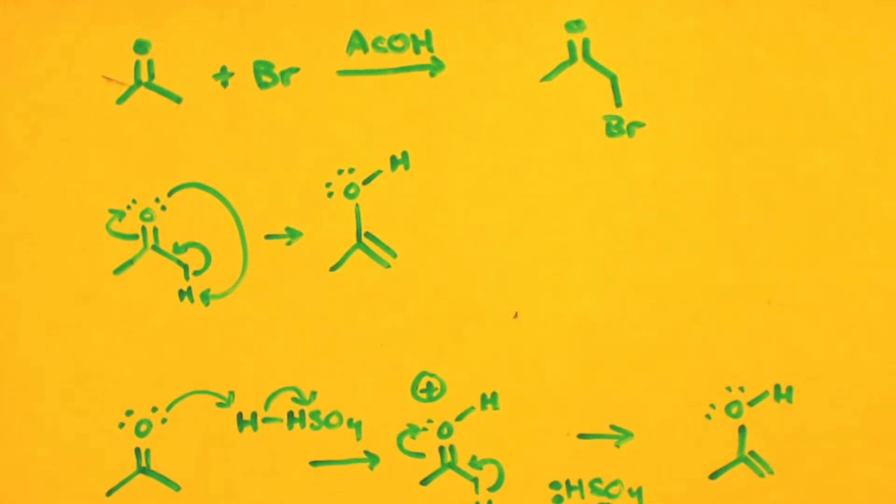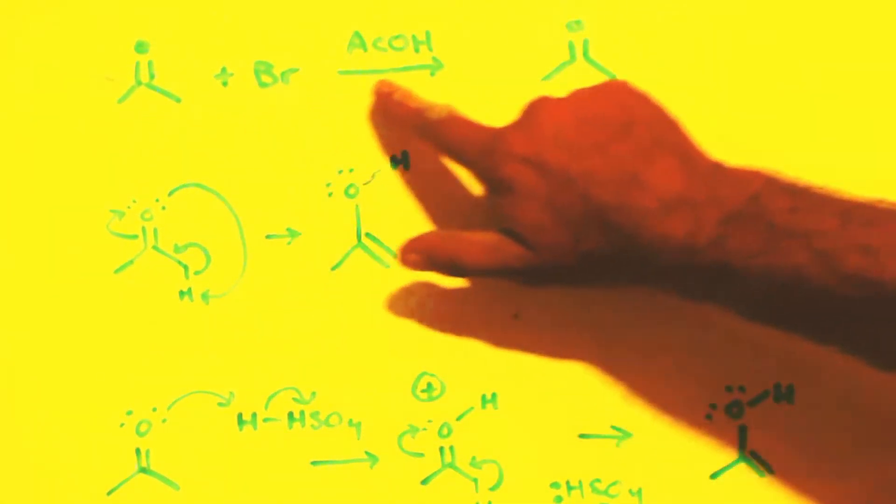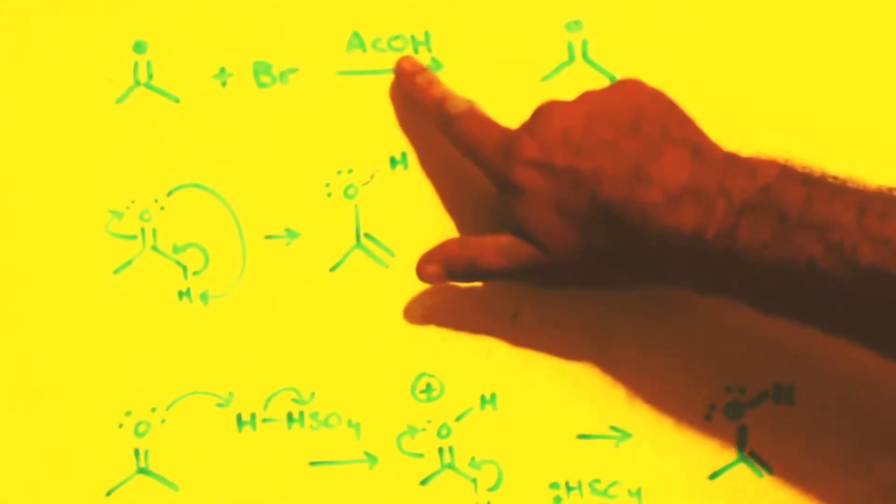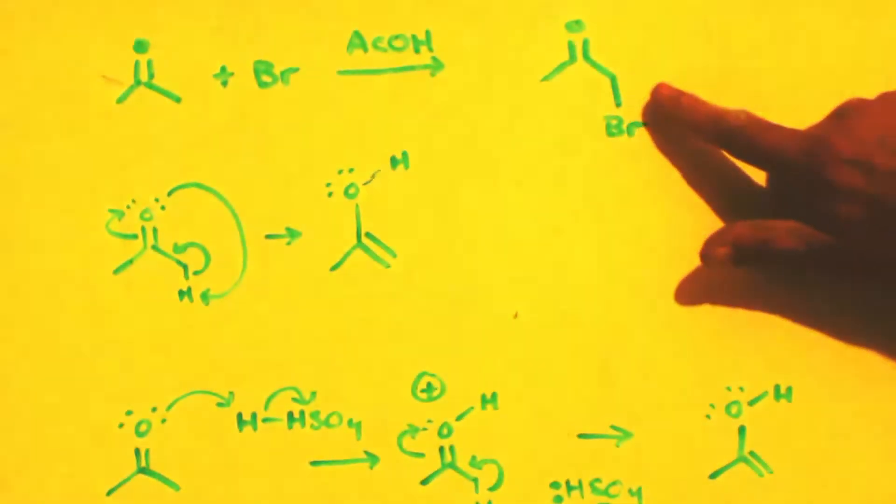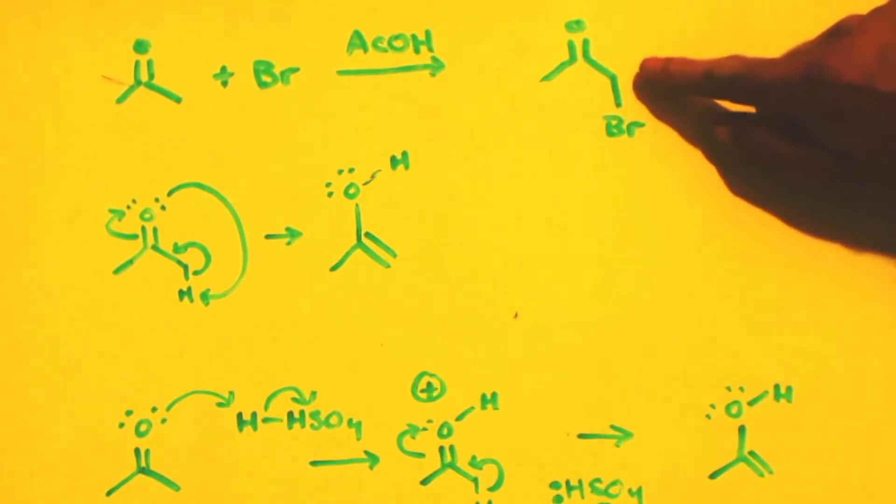The whole reason why this reaction works, here's the equation. Got your acetone, bromine, some type of proton, acetic acid, and this will add on the bromine on the alpha position.